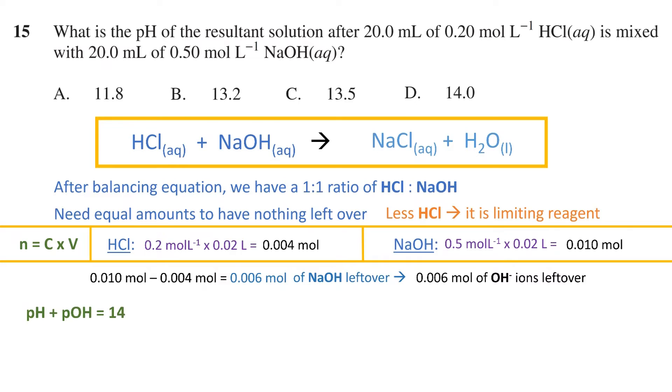We can now use the fact that pH and pOH add to 14, and the formula for pOH, in order to determine the pH of the resultant solution. To find the concentration of hydroxide ions, we use C equals n on V. The number of moles is 0.006, while the volume is just the sum of the two solutions that were added in the question. The two 20 milliliter samples add together to give us 40 milliliters. Therefore, the concentration of hydroxide ions is 0.15 moles per liter.